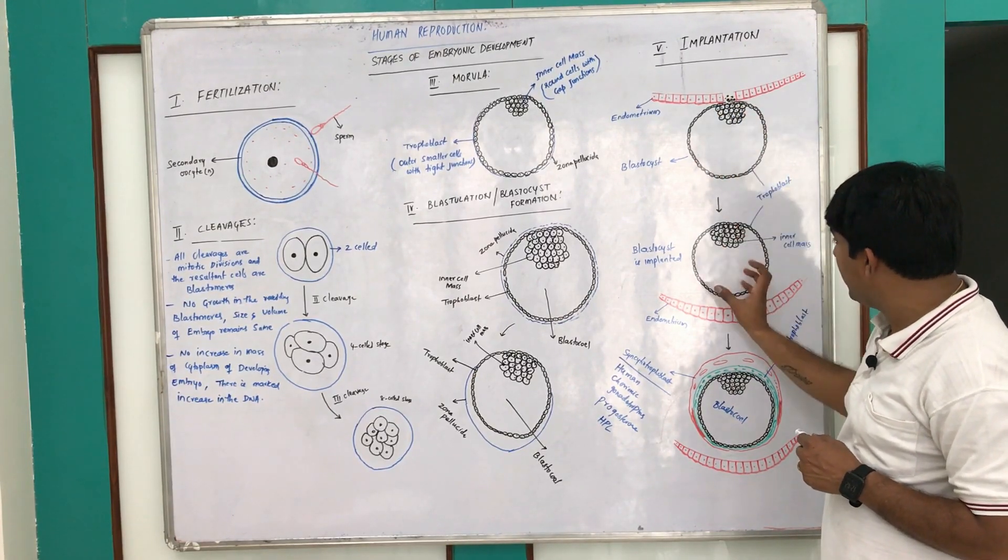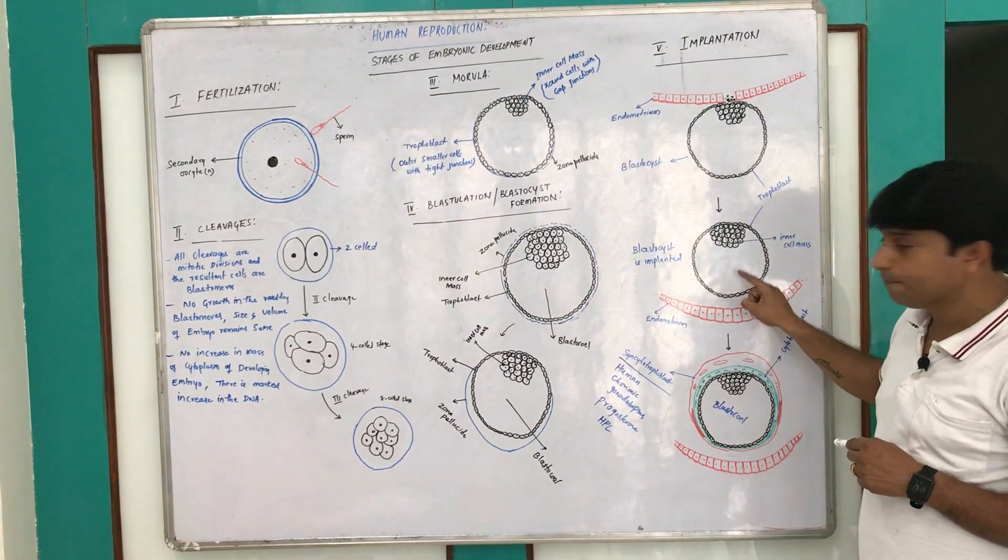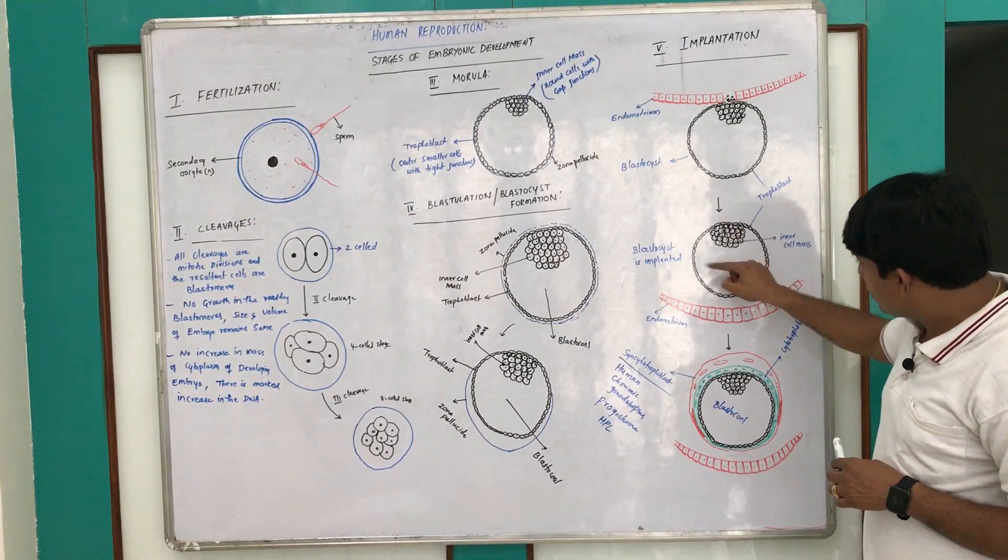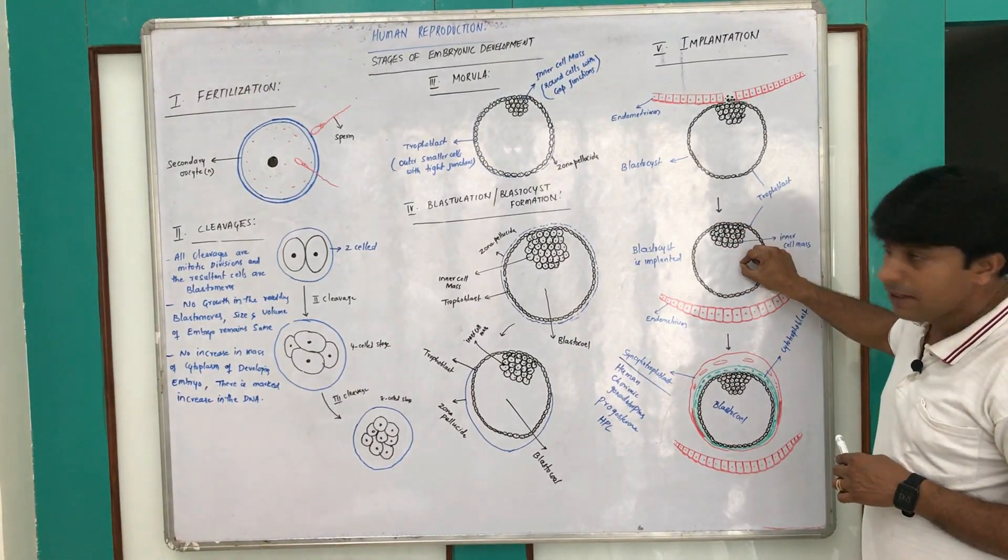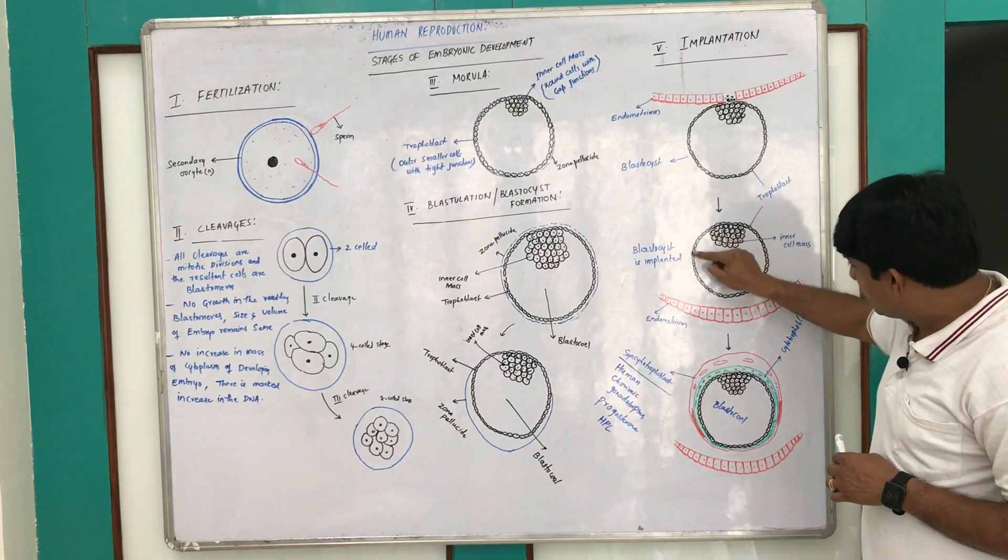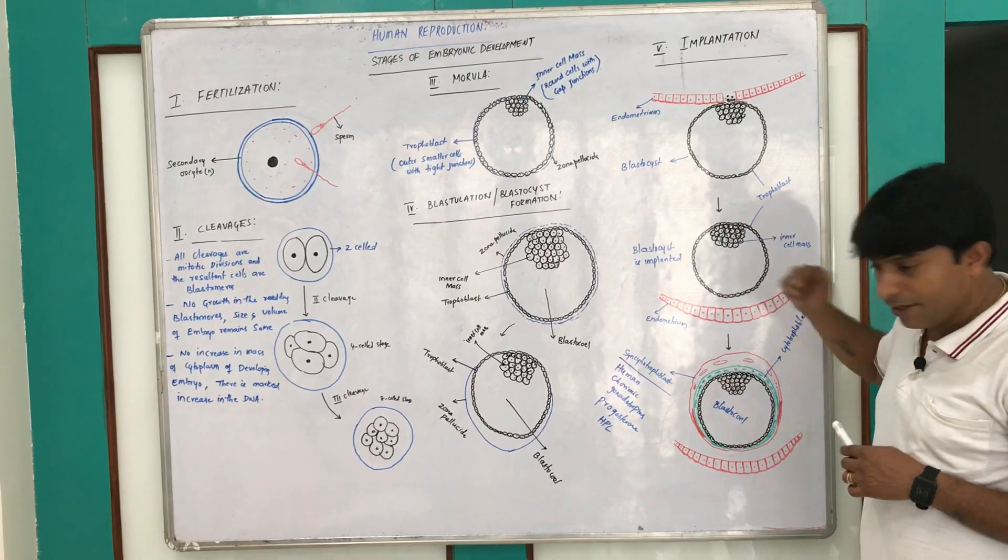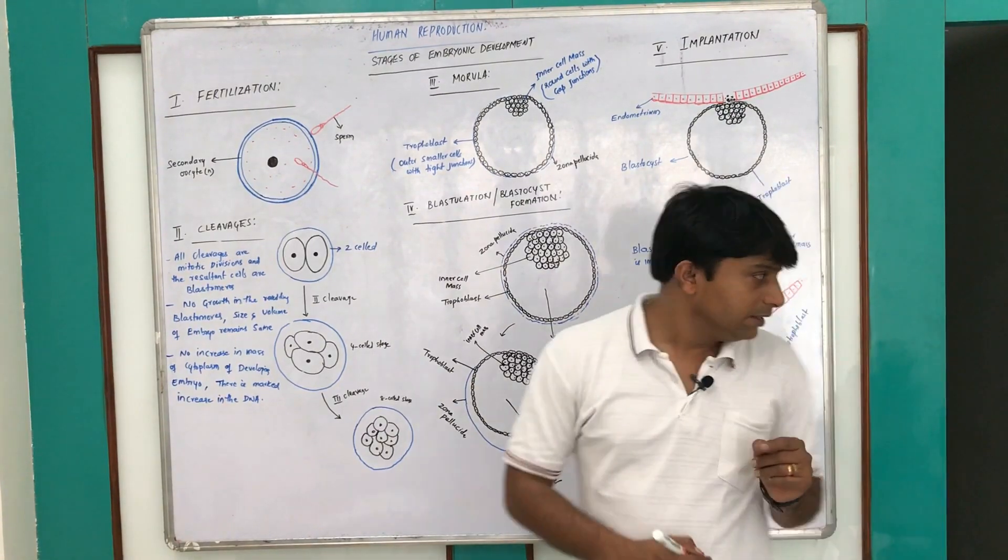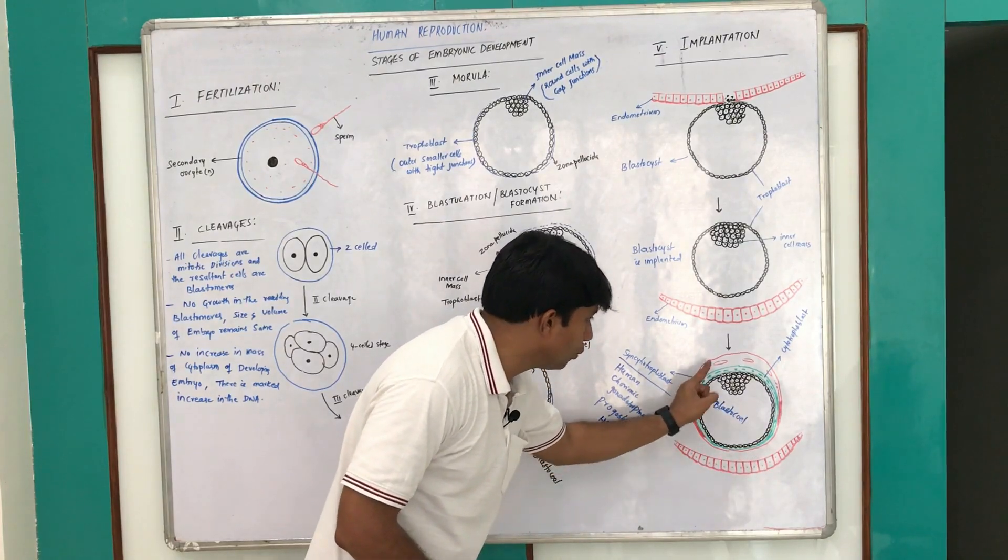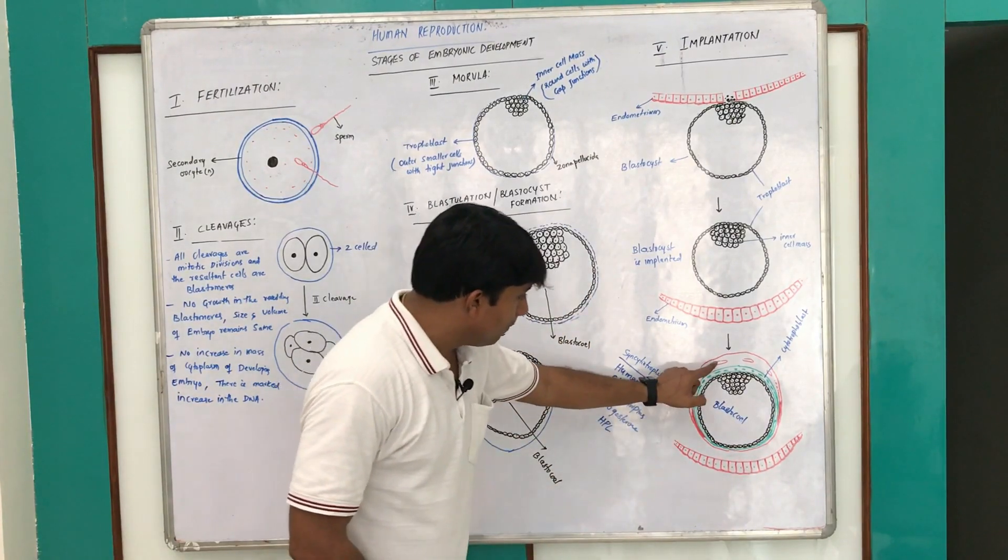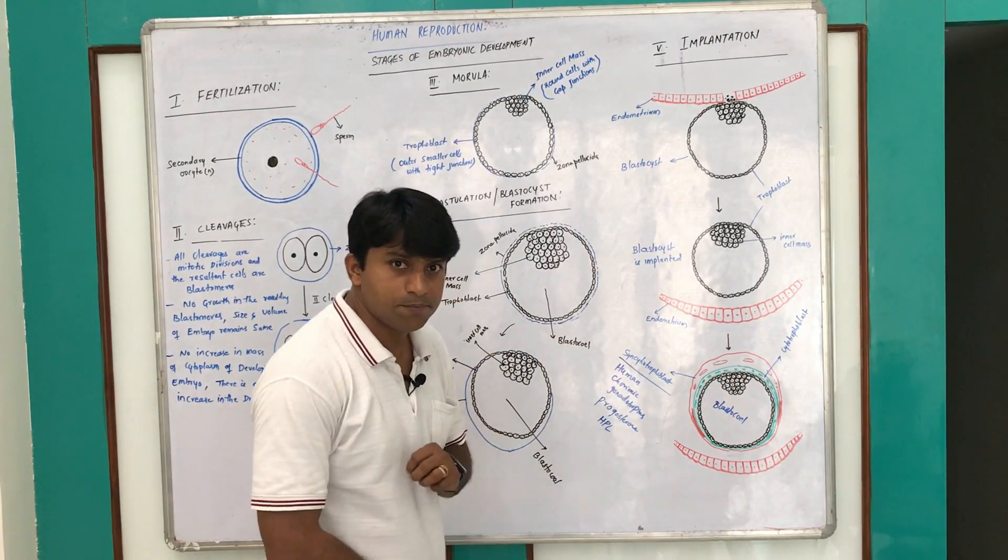Once the complete blastocyst is buried in the endometrium, the trophoblast cells will start dividing aggressively and they form layers. They form the outermost layer which is called the syncytiotrophoblast, and the layer which is below the syncytiotrophoblast is called cytotrophoblast.